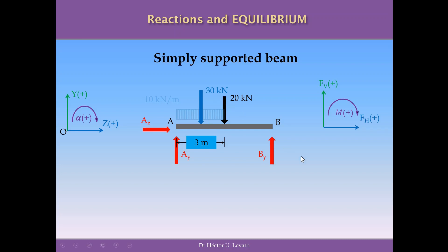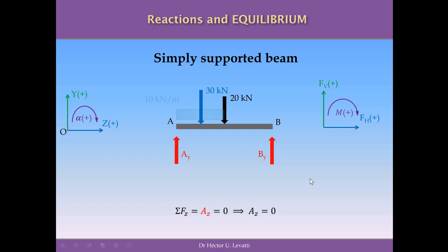Now we have two point loads and we can write equilibrium equations with well-defined distances. The first equation is the summation of forces in the z-direction (horizontal), which equals AZ. There are no other horizontal loads on this structure, so this equation gives AZ equals zero. Therefore, we delete this reaction from the free body diagram since it is zero.